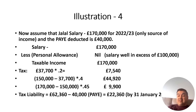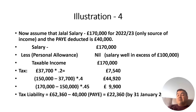With no personal allowance, Jalal's taxable income is £170,000. The first £37,700 is taxed at 20%. Then the gap between £37,700 and £150,000 is taxed at 40%. The gap between £150,000 and £170,000 is taxed at 45%. Once you have calculated all the tax liability, make sure you deduct the PAYE deduction, since Jalal was on wages and his employer already deducted PAYE from his salary.